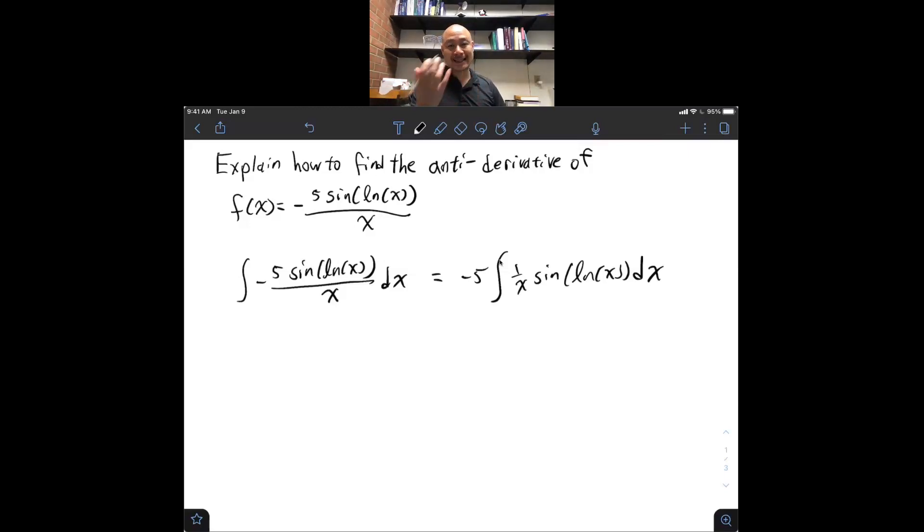Now, we need to find a candidate for substitution and a natural candidate for substitution is natural log of x. So, why is that? That's because I don't know how to anti-differentiate sine of log x, but I could anti-differentiate sine of u readily. And the derivative of log x is 1 over x, which is itself present in this problem. So, let's try that out and see if that makes for a reasonable choice.